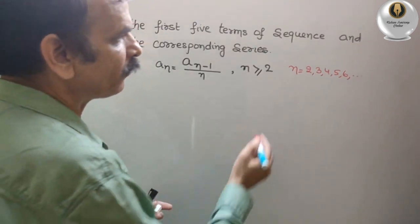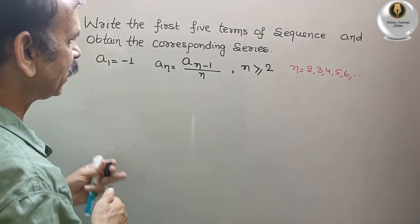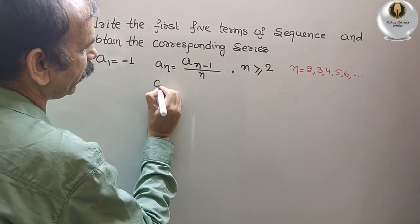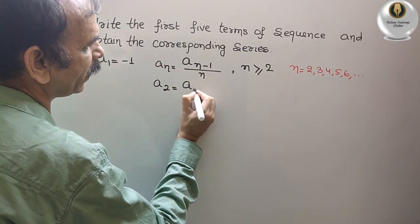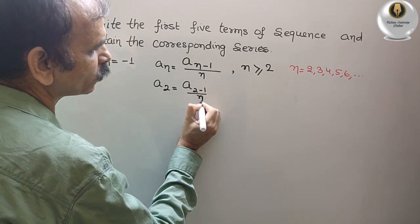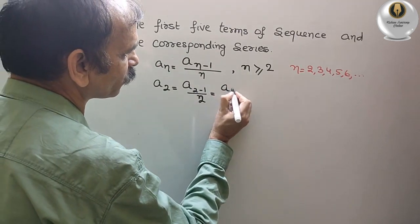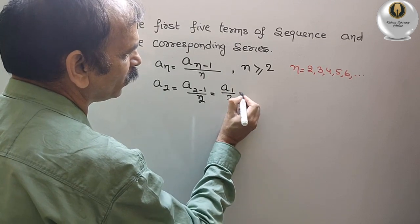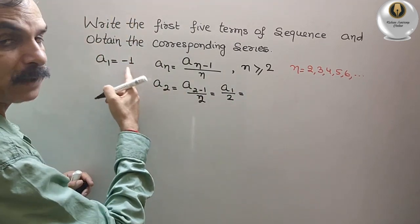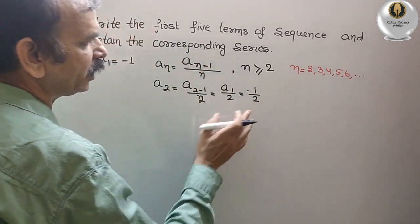So first we will find out when n is 2. See that, a2, that is equal to a2 minus 1 by n. n is 2. That is equal to a1 by 2. That is equal to, a1 is minus 1, so minus 1 by 2 is a2.